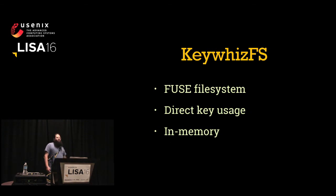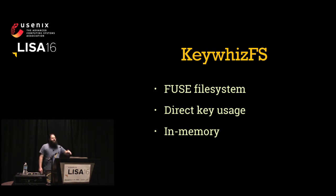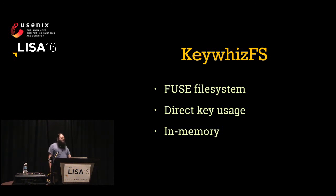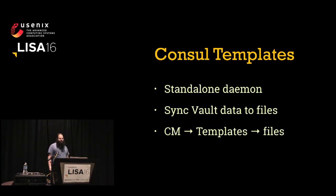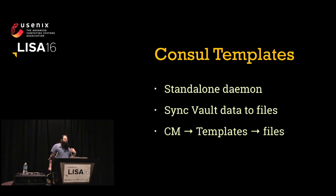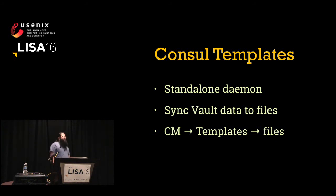KeyWizFS is a FUSE filesystem that speaks as a REST client directly to the KeyWiz service. When you request a key, it ends up buffered only in RAM — it's never written to disk, much safer, and easier to use with things you didn't write. For NGINX, you can just load your private key from a KeyWizFS path and it handles secrets management transparently. Consul Templates, originally for service discovery, also now supports HashCorp Vault and can be used to rotate secrets more frequently than your config management runs — for example, rotating a database password once an hour while Chef runs once a day.